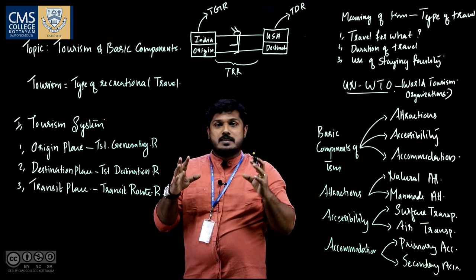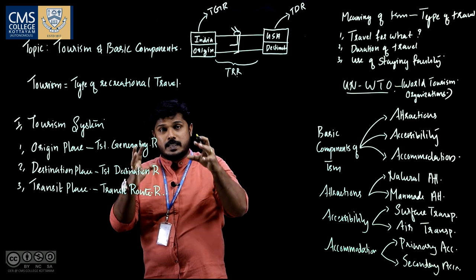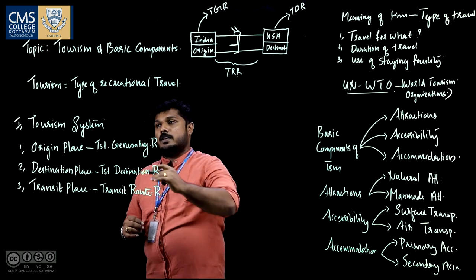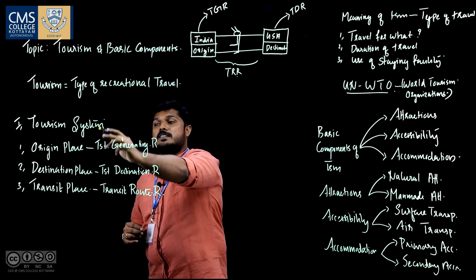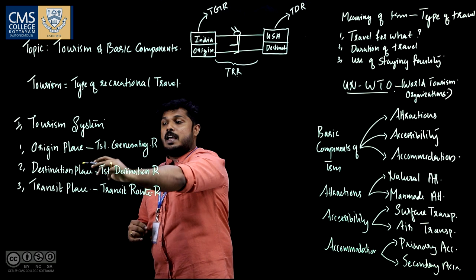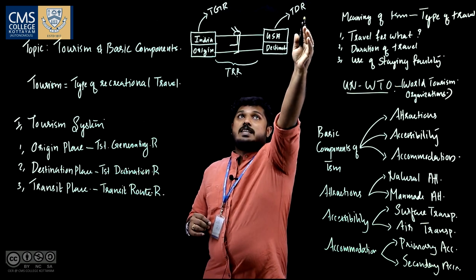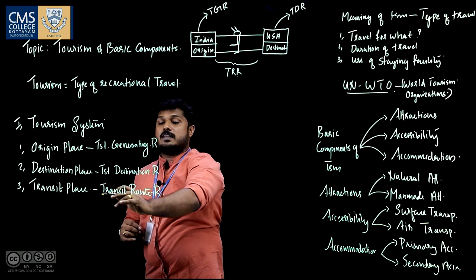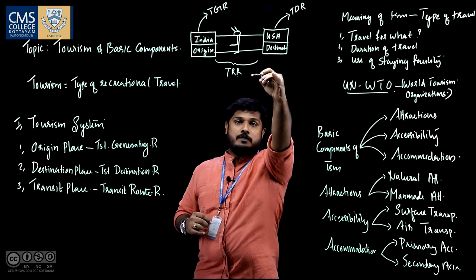The tourism system is one of the basic components or basic processes of the tourism phenomenon. To recap: the tourism system has mainly three places — origin place, also known as TGR; destination place, known as TDR; and the last one, transit place, known as TRR.